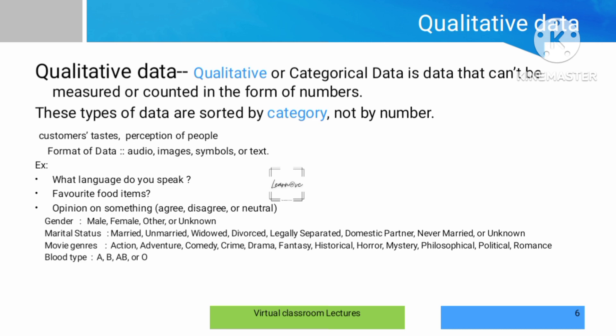Qualitative data means categorical data — the data belongs to one of several categories. For example, what language do you speak? Tamil, English, or Hindi? There are options and we choose one. Favorite food items: idli, dosa, vada — these are optional answers. Other examples include gender: male, female, or other; marital status; movie genre; blood type. If there are exactly two options, that is a binary categorical variable, such as true or false, or success or failure. If there are more than two options, that is a polytomous variable.